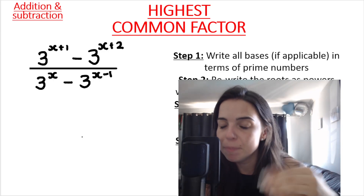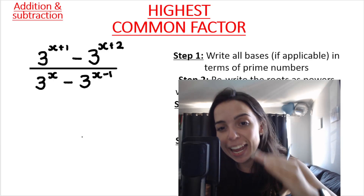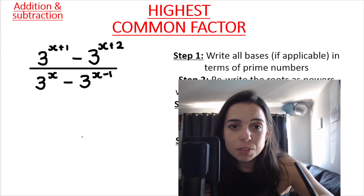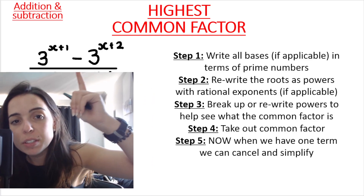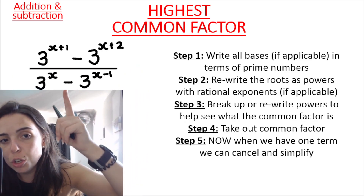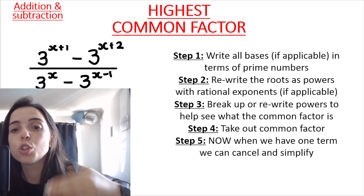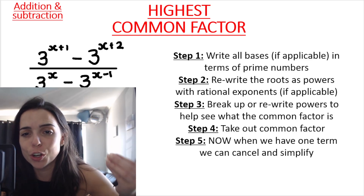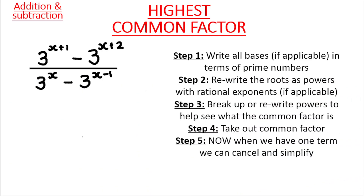The question says simplify. You must know you cannot cancel yet. You can't divide because there are two terms at the top separated by minus, and two terms at the bottom separated by minus. So we must factorize first. Step one: write all bases in terms of prime numbers — these are already in prime bases, so step one is done. Step two: rewrite roots as powers with rational exponents — we have no roots, so step two is done.